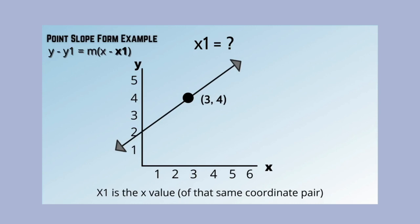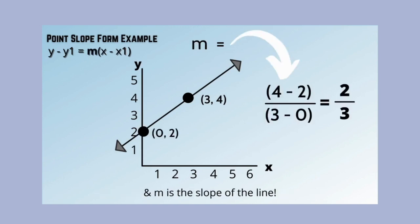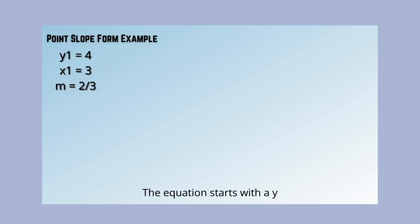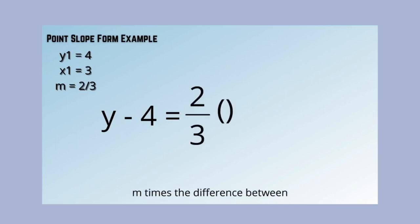The equation starts with y minus y1, then equals m times the difference between x and x1, and then we're done.